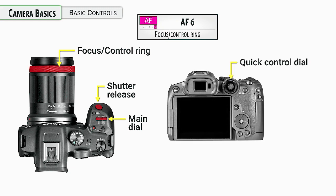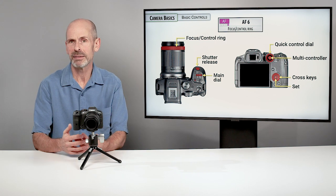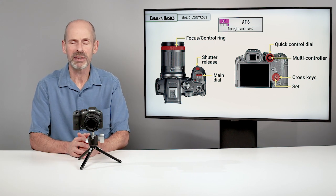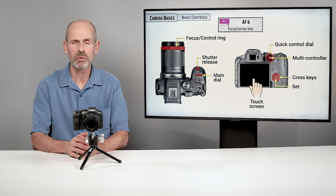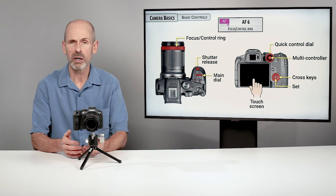On the back of the camera is a quick control dial, often used for controlling aperture in manual mode. The multi-controller usually controls the focusing point. The cross keys are great for navigating the menu system but can also move the focus point around. The set button is like the return key on a computer, confirming whatever setting you have highlighted.